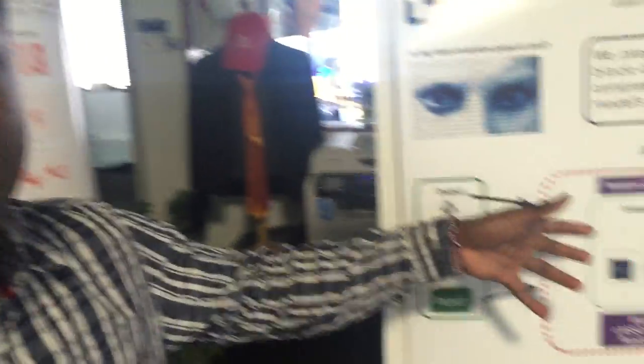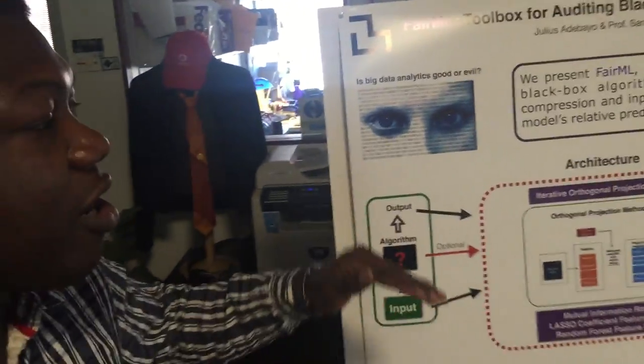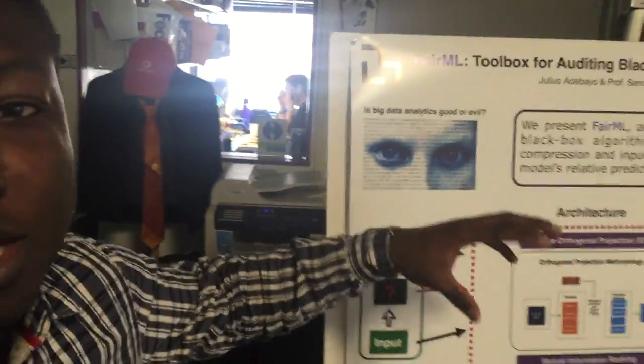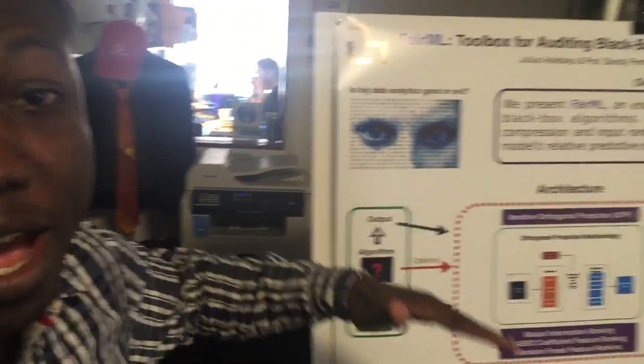Our goal is to use FairML as an audit toolbox that people at the FTC or CFPB can use to audit predictive models and the decisions coming out of them, in order to identify whether these models are biased or not.